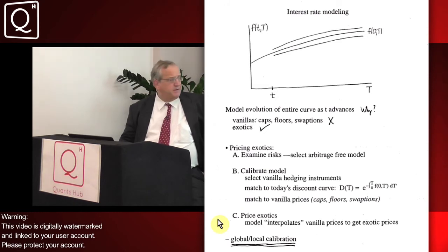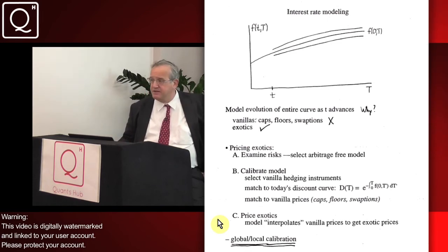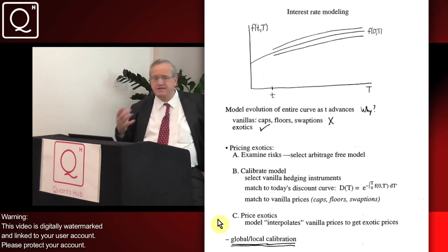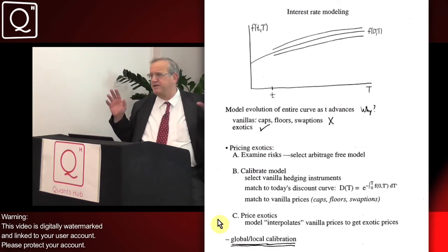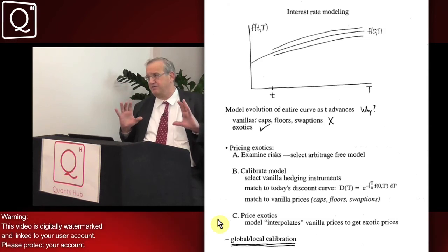Now, if you think about what's happening, once you calibrate the model, then you can go ahead and use the model to find out what the price of the exotic is. If you think what's really going on, in some funny sense what your arbitrage-free model does is it's sort of interpolating the price of the exotic from the known prices of the vanilla instruments that you've calibrated to.